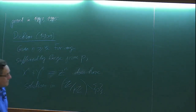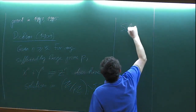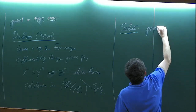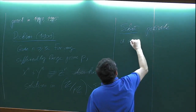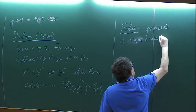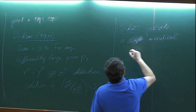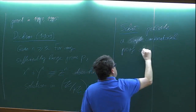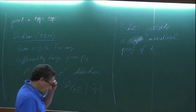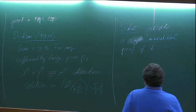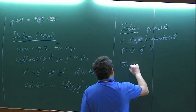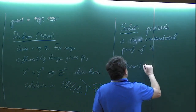That was Dixon's theorem, and then Schur's motivation was to provide a simple combinatorial proof of this result. And so he came up with his theorem - this is the combinatorial argument.